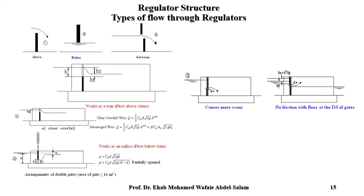Types of flow through regulators include: flow above the gate, flow under the gate, and flow between the gates. When flow is above the gate, the regulator works as a weir. When flow is below the gate, it works as an orifice. There are also arrangements of double gates, and cases with no friction with the floor at the downstream side of the gates.